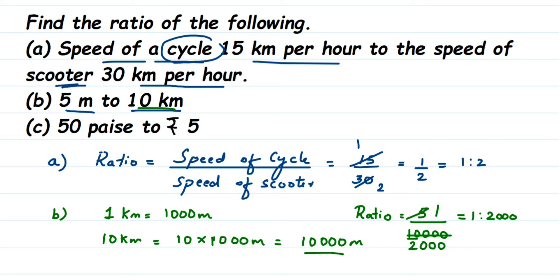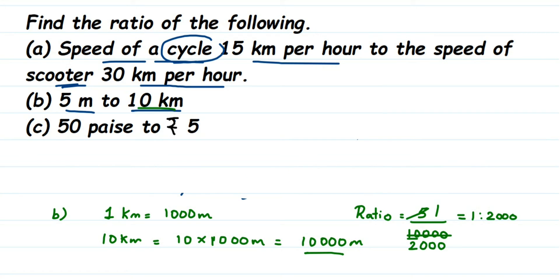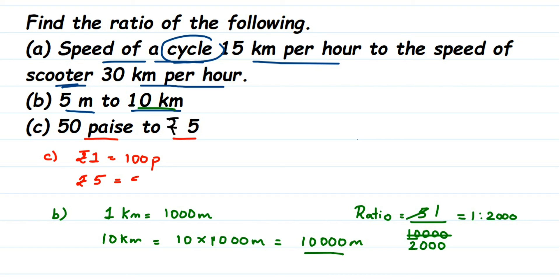Now for the third one: 50 paise to 5 rupees. We need to convert to the same unit. I'm going to convert rupees into paise. We know that 1 rupee is equal to 100 paise, so 5 rupees will be equal to 5 into 100 paise, which is 500 paise.